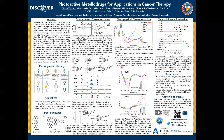We performed transient absorption spectra. For the ruthenium-0T complex, there is a ground state bleach, which shows negative absorption. For ruthenium-4T, instead, we see positive absorption centered at 660 nanometers, which is contributed by the oligothienyl units.